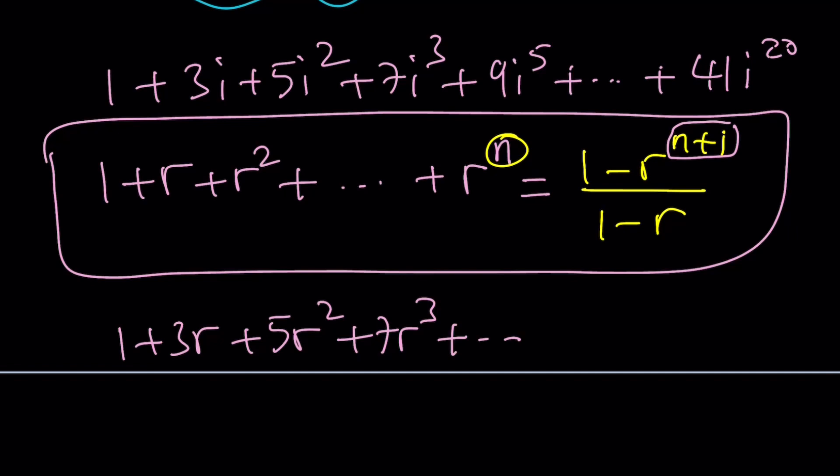First of all, notice that r has a coefficient of 1, r squared has a coefficient—everything is 1 here. So we need to add more terms, but one thing that I'd like to do is take this expression—that's kind of like an expression in terms of r—and differentiate it with respect to r.